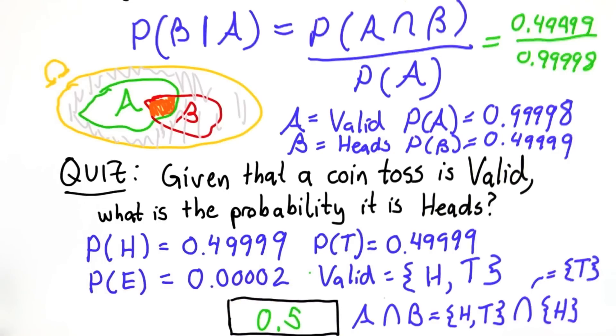When we talk about mathematical coin tosses, we're going to assume that there's no edge case, and that it's equally likely, that we have a uniform distribution and there are only two outcomes.